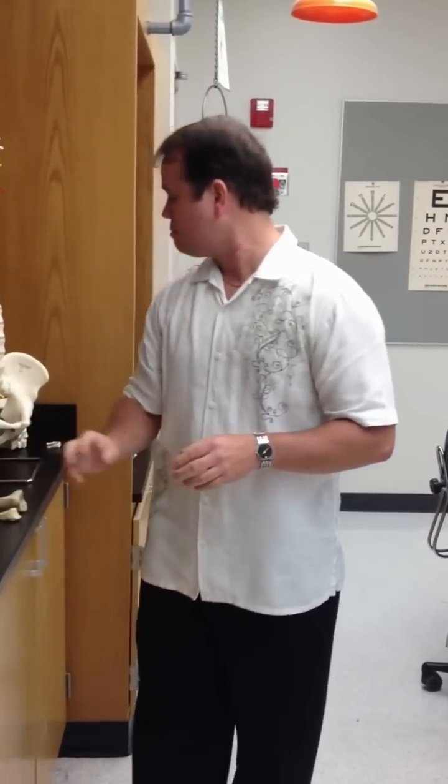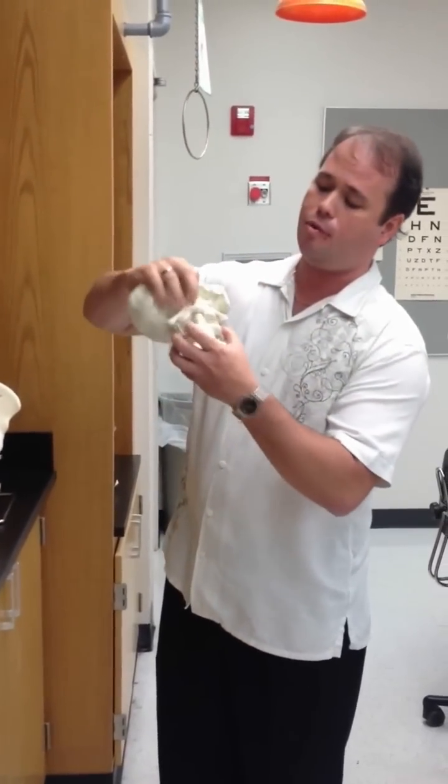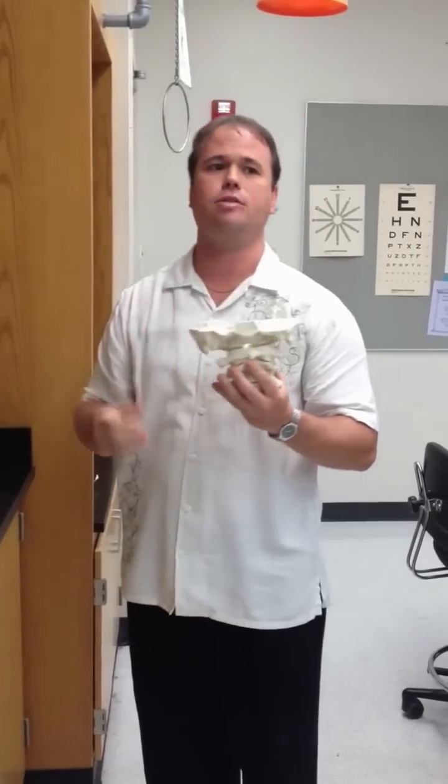From there, we have the hyoid bone, which is located right here. And if we have C1 and C2, the names for atlas and axis, this is atlas, this is axis, and this part of axis is called the odontoid process. Thank you very, very much for the review. I hope you guys do well.